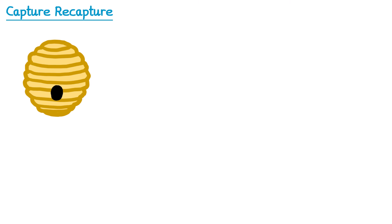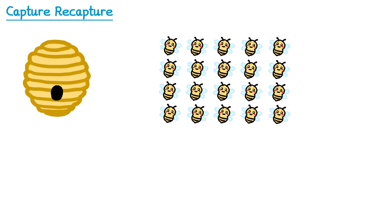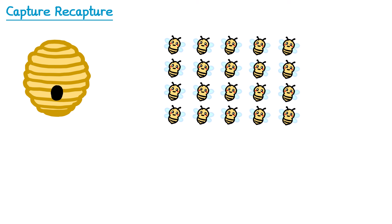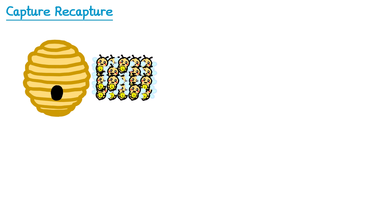To do this we would first capture a sample of the bees — for example, we might take 20 bees from the hive. Next we're going to mark all of these bees so that we can recognise them later. I'm going to assume we would stick a smiley face sticker on them. We then put those 20 marked bees back into the hive with the other bees.